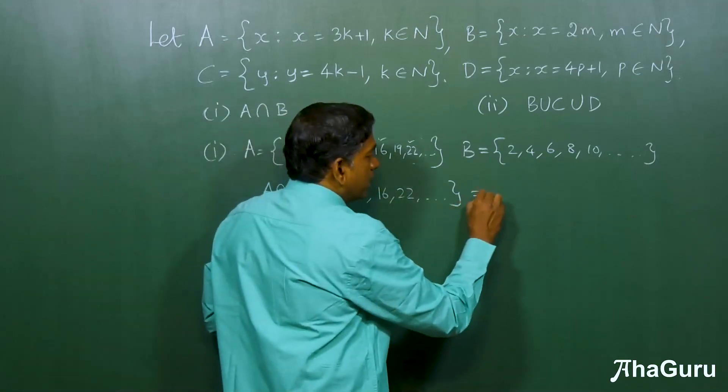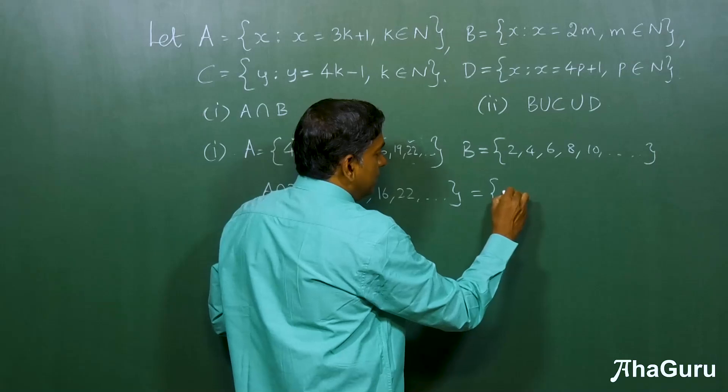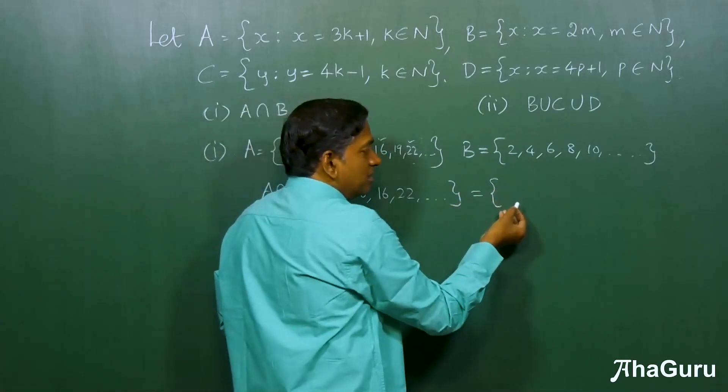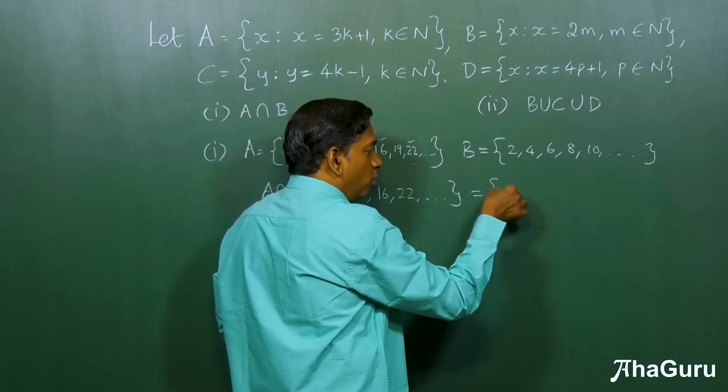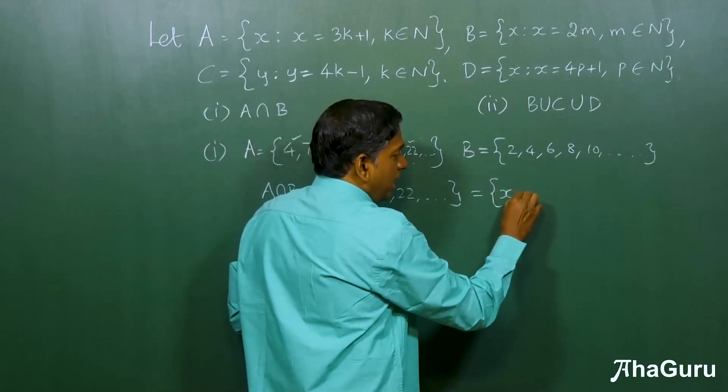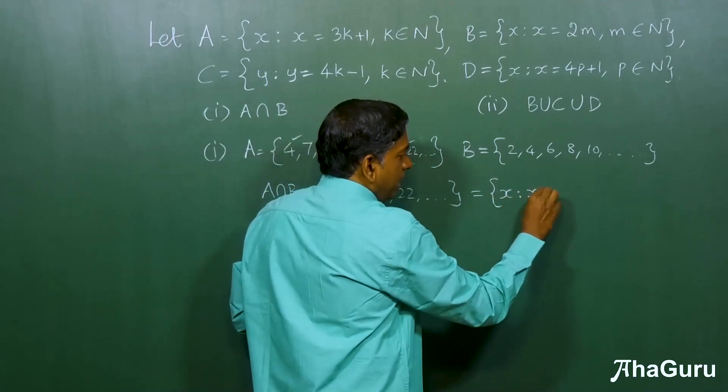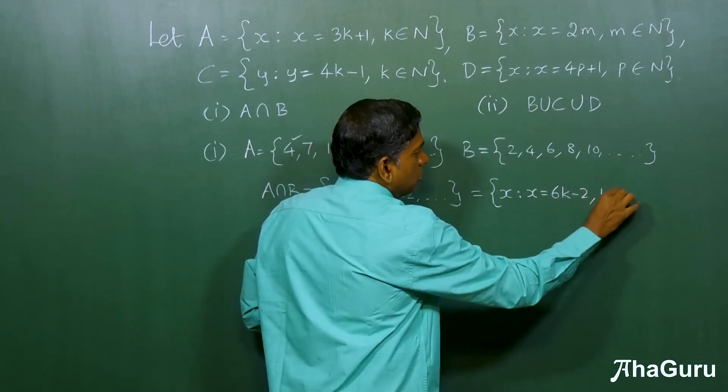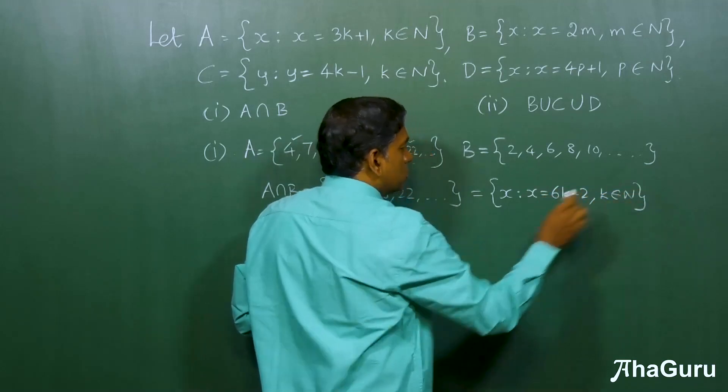So, you can write A intersection B as, now we can use x or y, it doesn't matter. The variable is just something to hold the place. x such that x equals 6k minus 2, where k belongs to n.